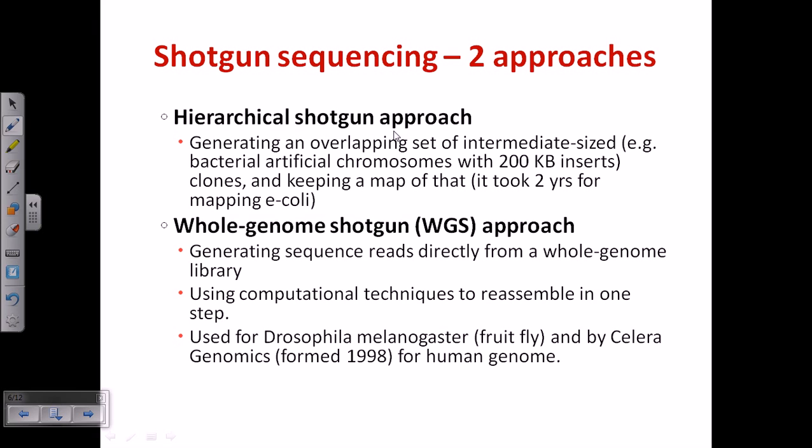The hierarchical shotgun sequencing generates an overlapping set of intermediate-sized clones, like 200 KB insert clones, and then utilizes those clones to further study, sequence, divide them, and finally sequence them.